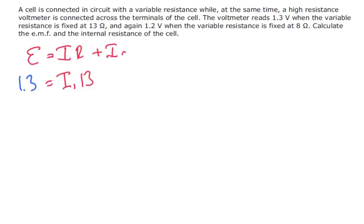When we've got the external resistor as being 13, we know that the voltage across here is equal to 1.3. And then again, 1.2 is equal to the current, we're going to call it current 2, when our voltage is 8.